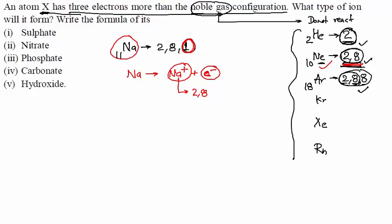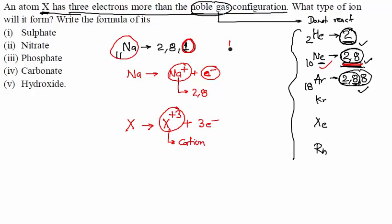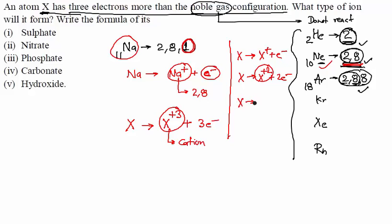So X has three more electrons than the noble gas configuration. It will lose three electrons and form X³⁺ plus three electrons — this particular cation. If X has one more electron it forms X⁺, if two more it forms X²⁺, and if three more it forms X³⁺.